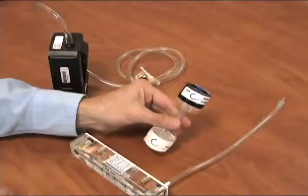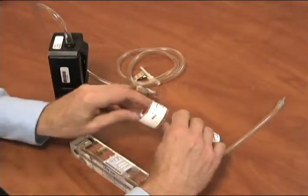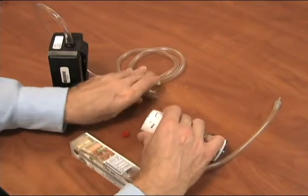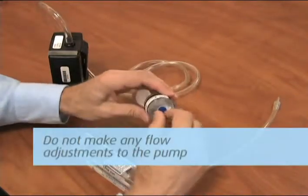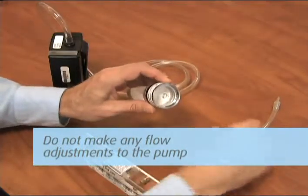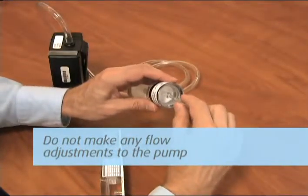After sampling is complete, perform the post-calibration the same way you did the pre-calibration using the marked calibration filter cassette assembly. Do not make any flow adjustments to the pump. Just record the flow rate on the pump calibration sheet.